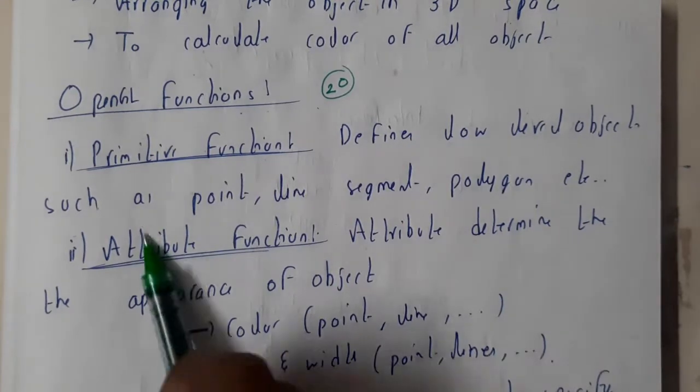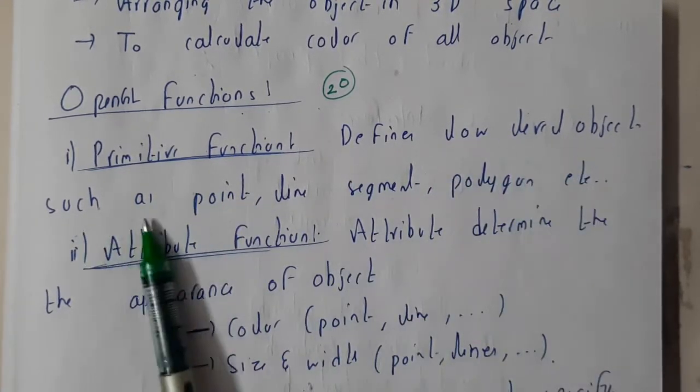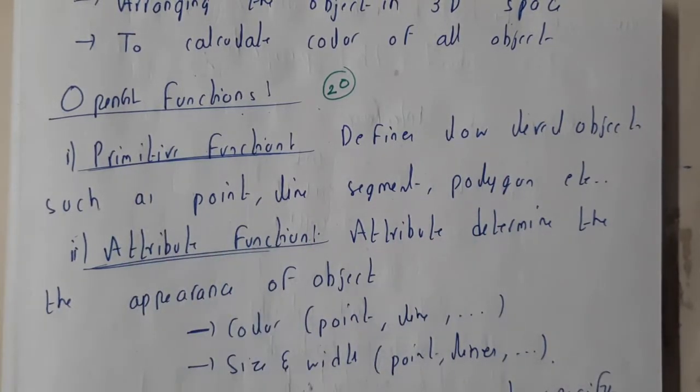The first function that we will be using is primitives. It defines the low-level objects such as points, lines, segments, polygons. Those are nothing but primitives.